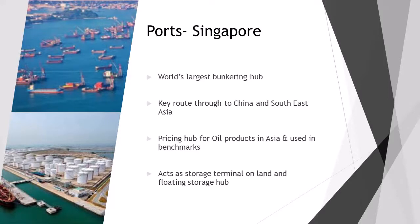Singapore is the world's largest bunkering hub. These pictures show what it actually looks like — you'll see a lot of ships anchored. Singapore provides the key route through to China and Southeast Asia and, being the largest bunkering hub, it makes sense that it's also the key pricing hub for oil products in Asia. A lot of benchmarks are centered around the price of oil in Singapore because so much oil is exchanged there on a physical basis. It also acts as a storage terminal, both on land and as floating storage with ships.